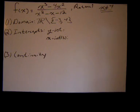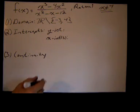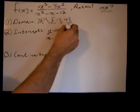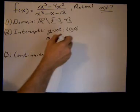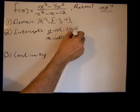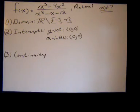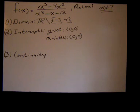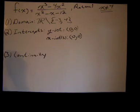Now we can look at the intercepts. The y-intercept is where x equals 0: we get 0 in the numerator and negative 12 in the denominator, so we have a y-intercept of (0, 0). Consequently, we also have an x-intercept of (0, 0). The other value that makes the numerator 0 is x equals 4, but f is not continuous at x equals 4, so it is not an x-intercept — in fact, it doesn't exist there, so it can't be an x-intercept.